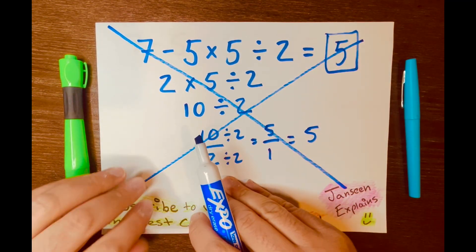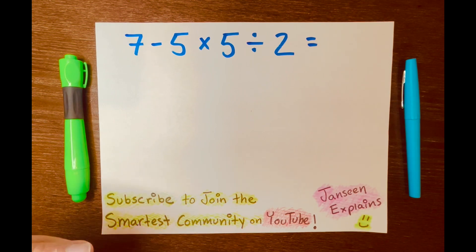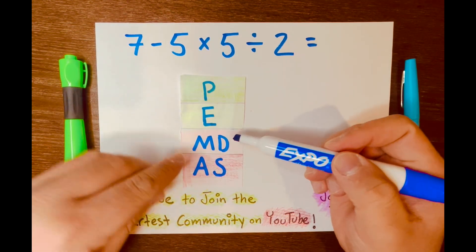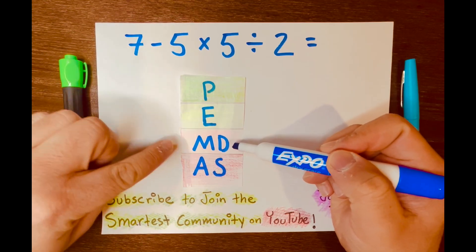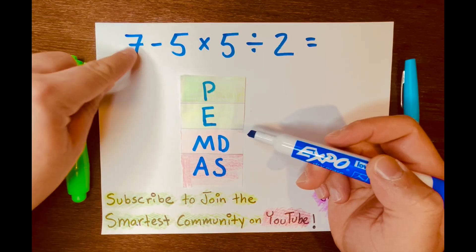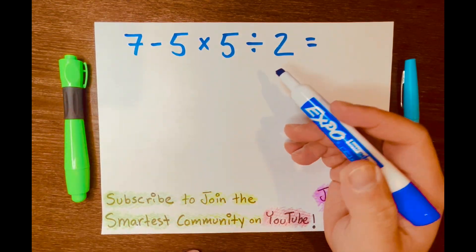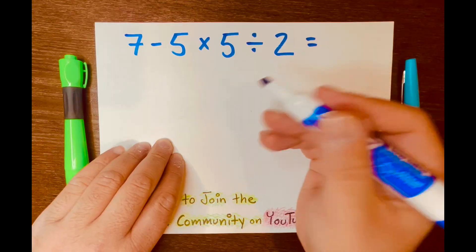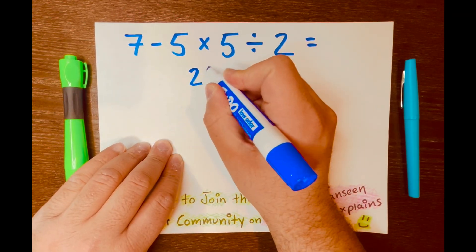Let me show you how to solve this math problem correctly using PEMDAS. PEMDAS is telling me that we multiply 5 times 5, so we do multiplication first, not subtraction. So let's multiply 5 times 5, which equals 25, so I'll write 25.